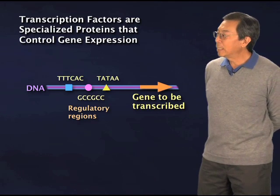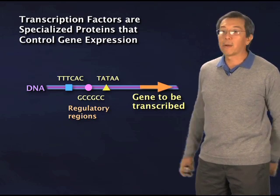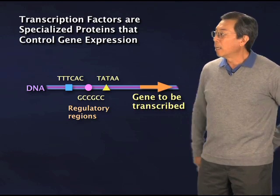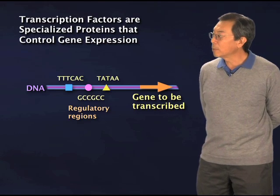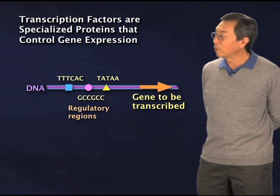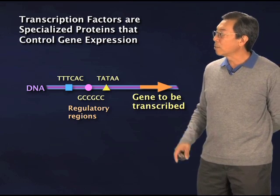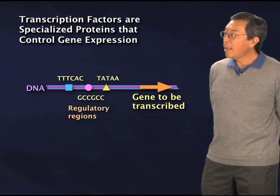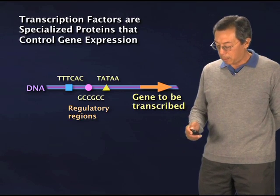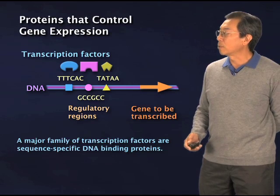Why are we so interested in these little stretches of nucleic acid sequence in the genome when it's buried amongst billions of other sequences? Well, these individual little sequences turn out to be very important because of where they sit — you'll notice they're sitting near the top of the arrow. And they are recognized by very special proteins, which are the transcription factors.